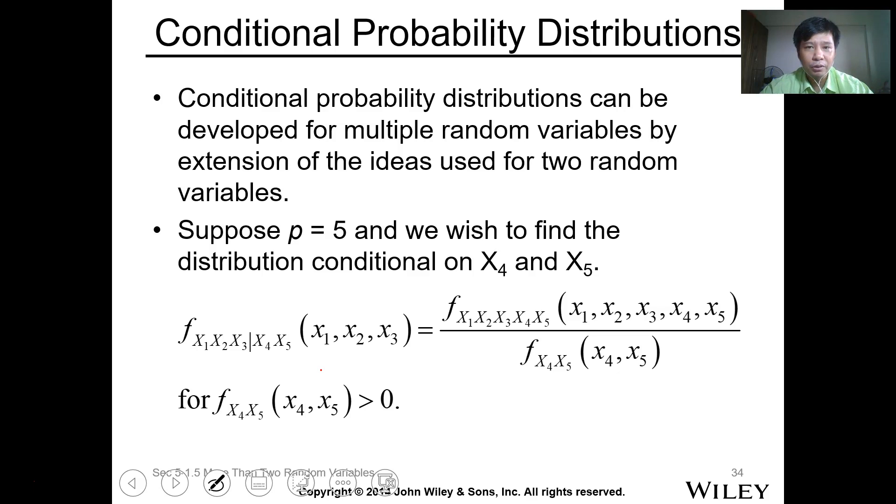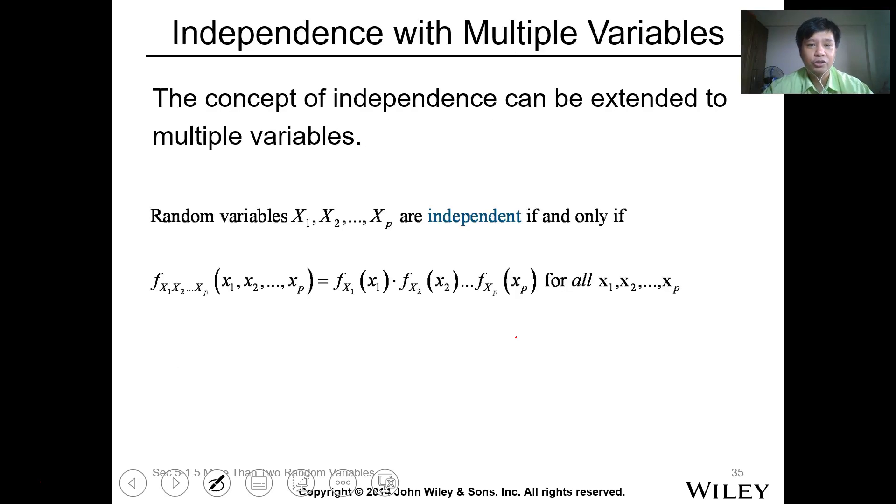Then you can have the conditional probability distribution. An example is that here we have 5 variables, and we wish to find the distribution conditional on x4 and x5. So the probability of x1, x2, x3 given x4, x5 is just the function of x1 to x5 divided by the subset distribution of x4 and x5 only.